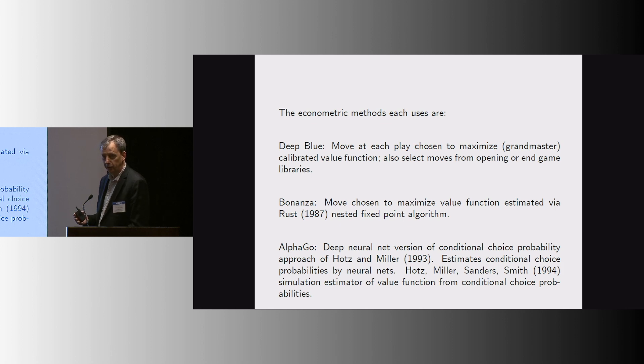And the econometric methods each used remarkably. Deep Blue was constructed by grandmasters getting together and picking the parameters. Okay. So, it's impressive. And then Bonanza moved to using the Rust-type approach to get a value function estimate, which was then used in making the choices about what moves to make. And then AlphaGo is deep neural net version of estimating the conditional choice probabilities, and then using simulation to back out the value function from those conditional choice probabilities, and then use that in determining the moves. So, I want to make a few comments.